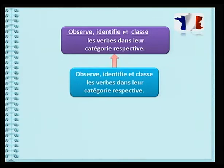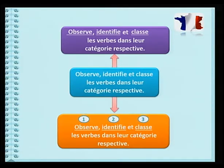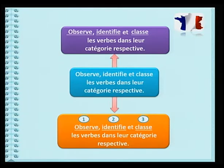Maintenant, as-tu numéroté tes tâches? Donc, la première tâche est «observe», la deuxième tâche est «identifie» et la troisième tâche est «classe». En bref, tu regarderas attentivement chaque verbe, tu sauras dire ce que c'est et ensuite, tu pourras mettre le verbe à la place qui convient.